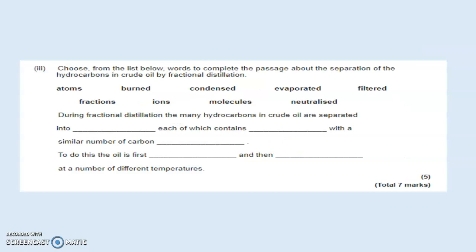Let's look at the next question. You've been given a list. Choose from the list below words to complete the passage about separation of hydrocarbons in crude oil by fractional distillation. During fractional distillation, the many hydrocarbons in crude oil are separated into fractions, each of which contains molecules with a similar number of carbon atoms. To do this, the oil is first evaporated and then condensed at a number of different temperatures. Well done if you've got full marks there.